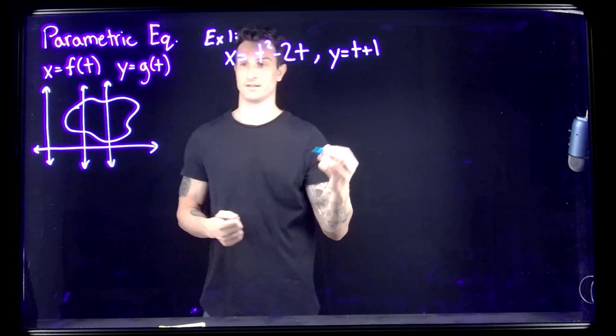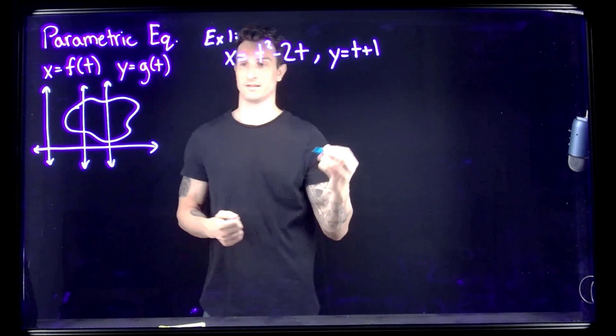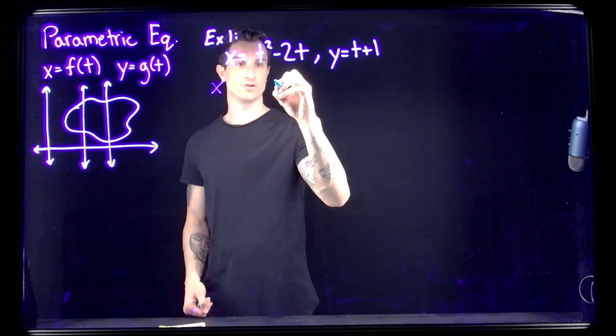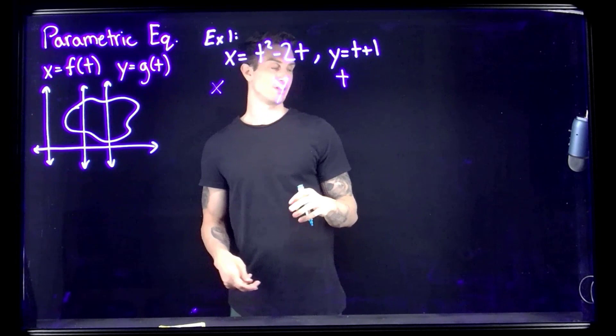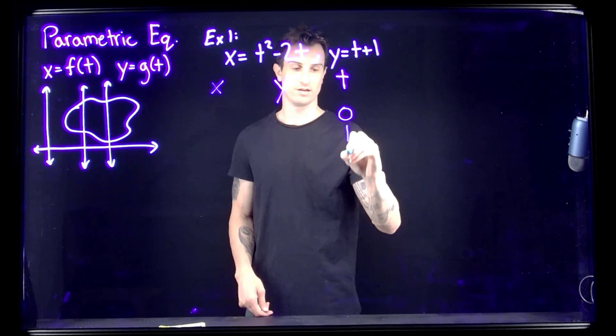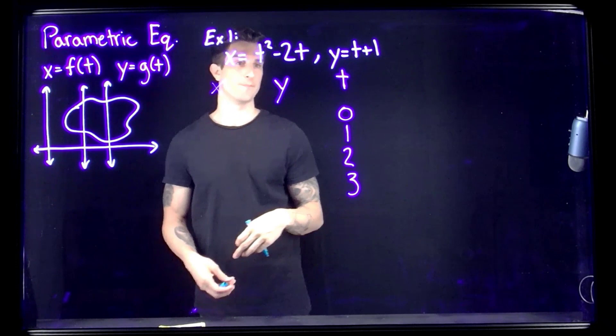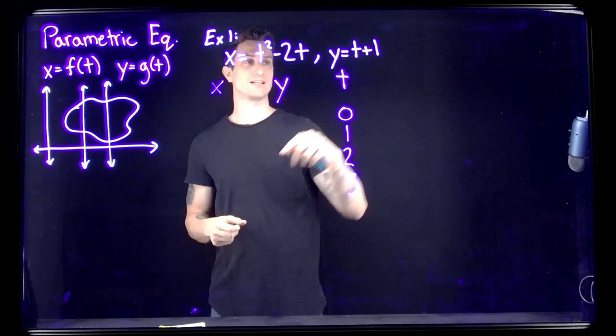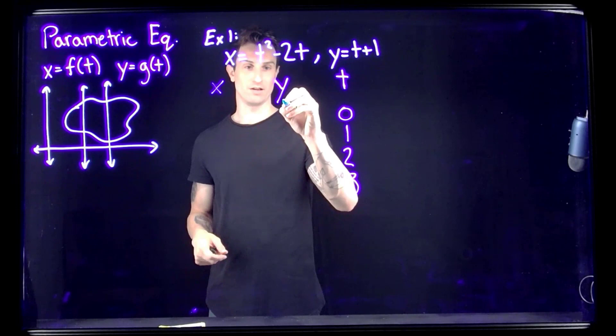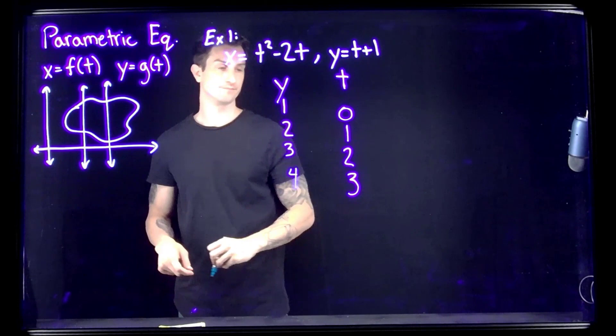To get used to these equations, we're going to plot some points. We'll use x, y, and t to form triples. The t is the free variable — I can pick whatever t's I want. I'm going to pick 0, 1, 2, and 3, since the homework wants four points. For y, which is t plus 1, we get 1, 2, 3, and 4.